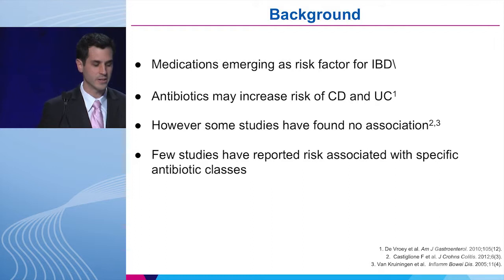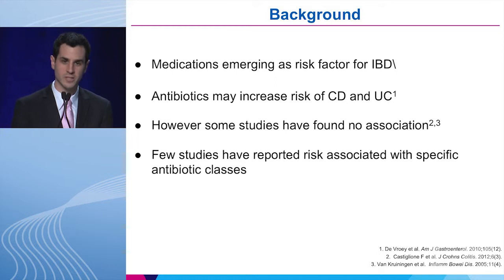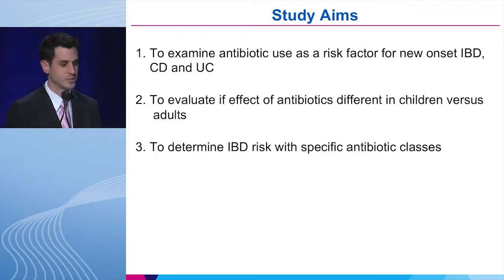Medications are beginning to emerge as a possible risk factor for IBD. In particular, antibiotics appear to potentially increase the risk of new onset UC and Crohn's disease in certain studies. However, this is not consistent across studies, and there are some studies that show no association. In addition, we don't have much information about the risk of particular types of antibiotics and the subsequent risk of increased Crohn's disease and ulcerative colitis. Because of this conflicting data in the literature, we decided to do a meta-analysis to better understand the association between antibiotics and new onset IBD.